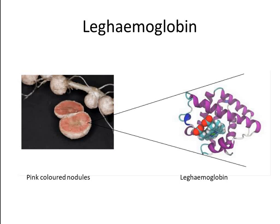Leghemoglobin has a high affinity for oxygen; its Km value is about 0.01 micromolar, about 10 times higher than the beta chain of human hemoglobin. Although leghemoglobin was once thought to provide a buffer for nodule oxygen, recent studies indicate that it stores only enough oxygen to support nodule respiration for a few seconds. Its function is to help transport oxygen to the respiring symbiotic bacterial cells, analogous to hemoglobin transporting oxygen to respiring tissues in animals.